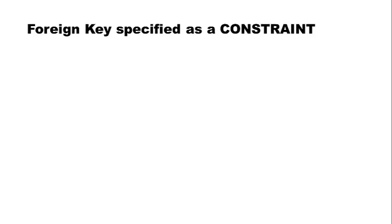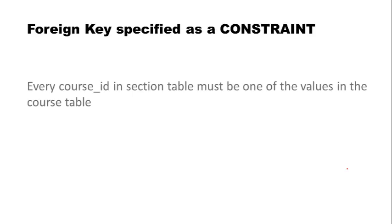We already know that in a one-to-many relationship, the primary key of the entity on the one side becomes the foreign key of the entity on the many side. A foreign key is also a constraint. Consider the example of course ID inside the section table — suppose you are offering a section of a particular course.